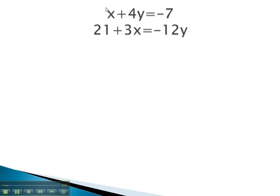In this problem, we see a lone variable, x. We get that lone variable alone by subtracting 4y from both sides. This gives us x is equal to negative 7 minus 4y.